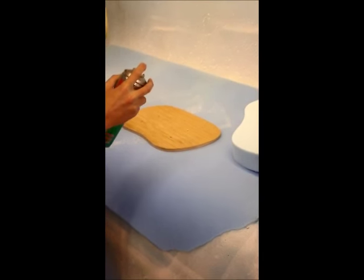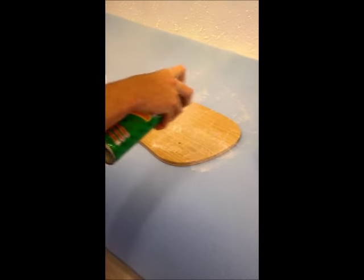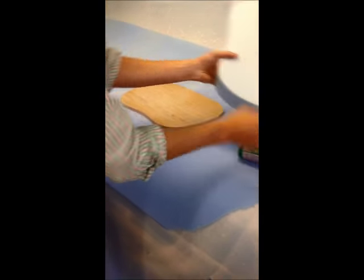First of all you want to apply the glue to the wood, spraying it about six inches away like that, not too much you don't really need that much.